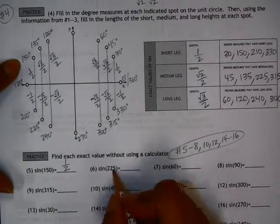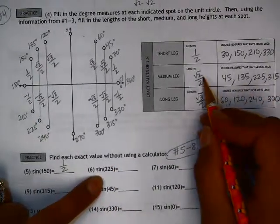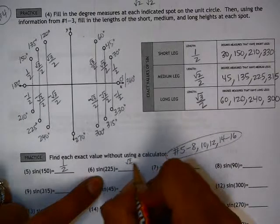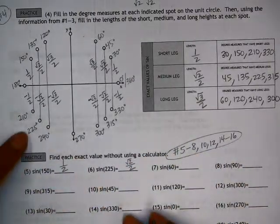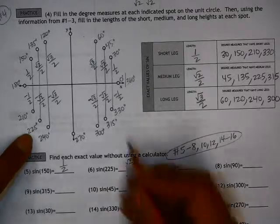When we get to sine of 225 degrees, we're here with a medium leg of root 2 over 2, but we need to consider that 225 degrees is below the x-axis here in the third quadrant, which makes it a negative.